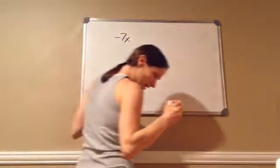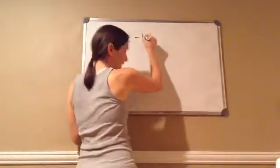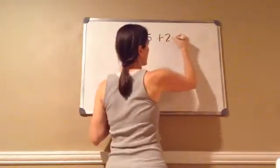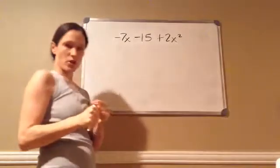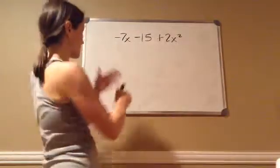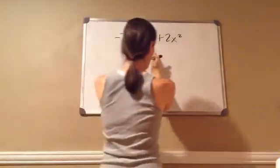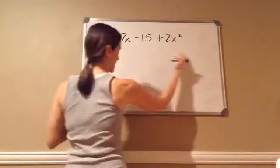Negative 7x minus 15 plus 2x squared. Now, my first encouragement to you would be to write it going x squared, then x, and then the number. In descending order.